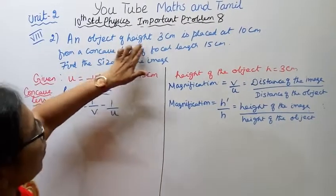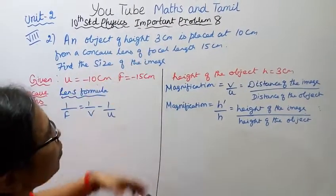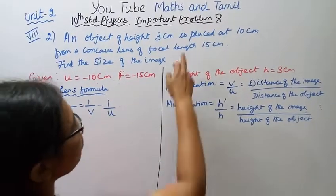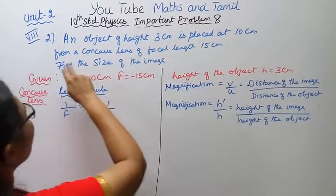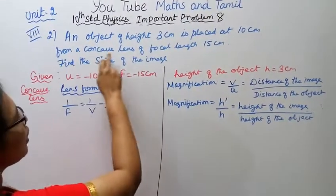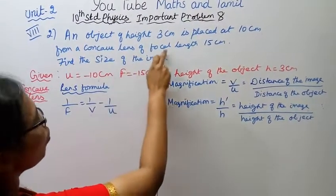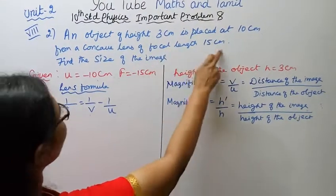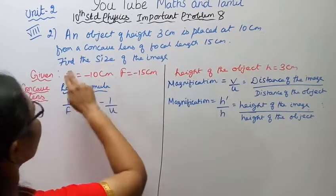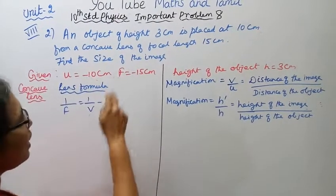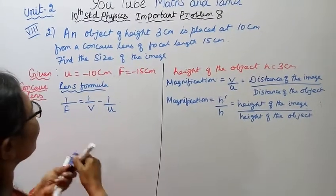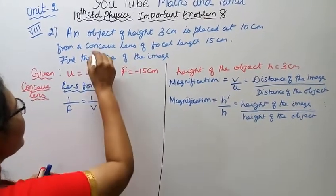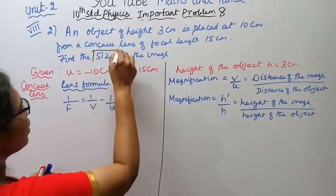An object of height 3 cm is placed at 10 cm from a concave lens of focal length 15 cm. Find the size of the image.